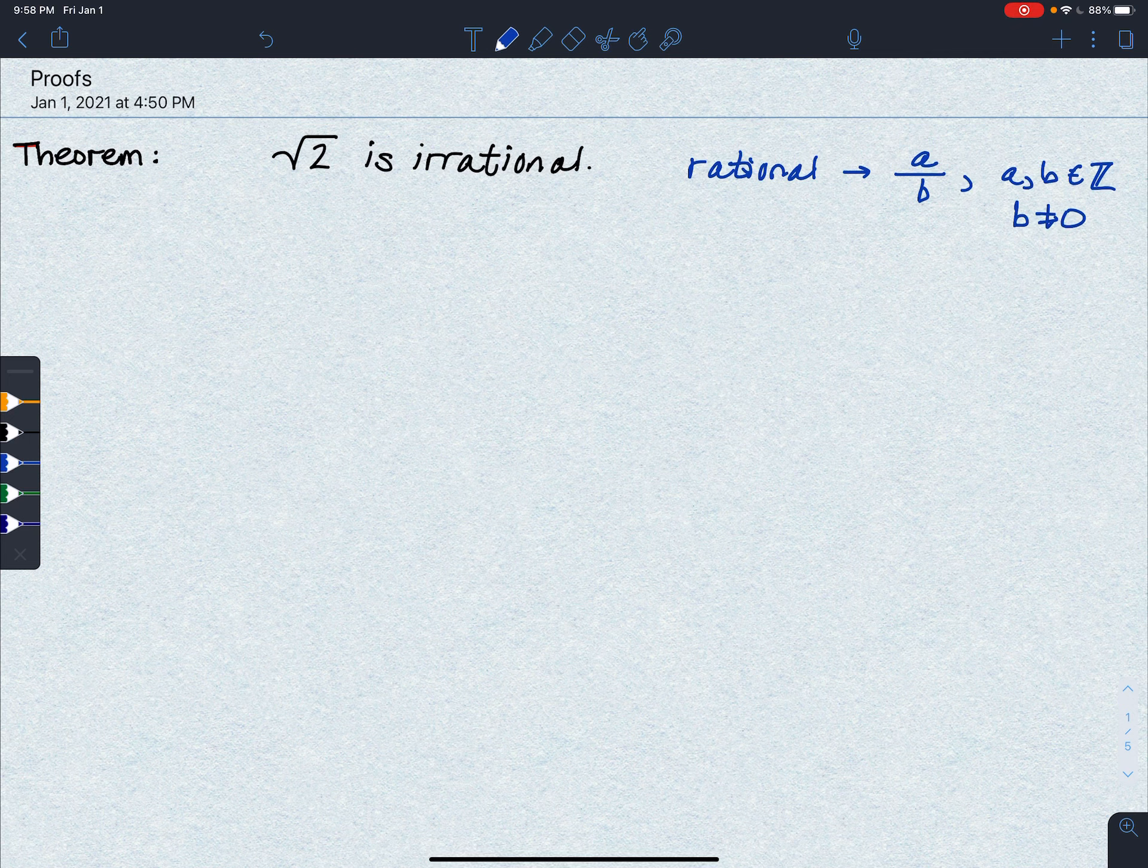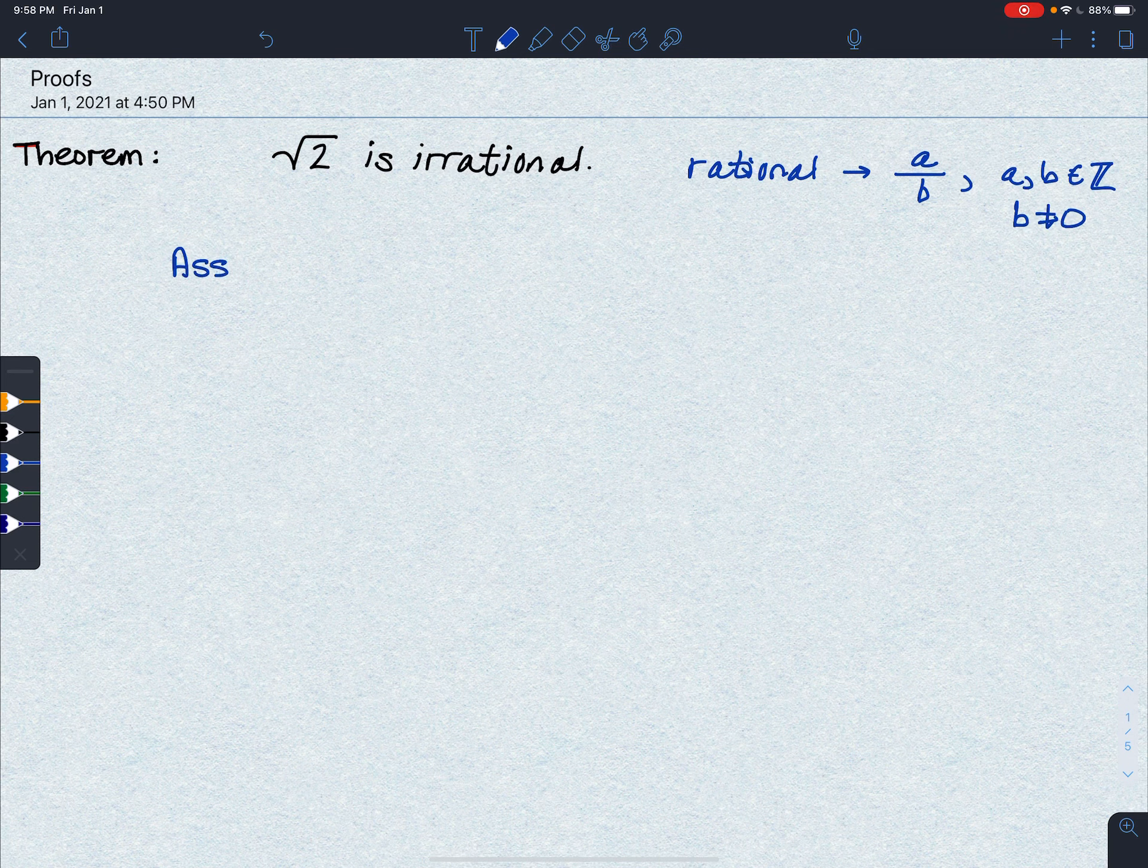So we're going to say, assume that the square root of 2 is rational, and that means that the square root of 2 is equal to a over b as defined above. And we're going to stipulate that a and b have no common factor.